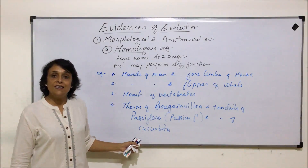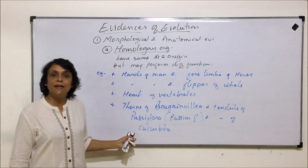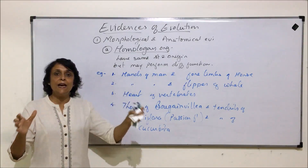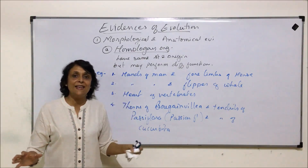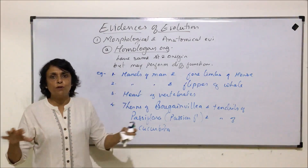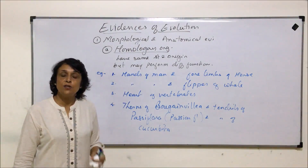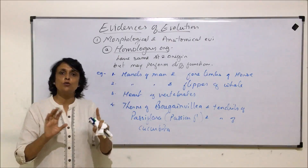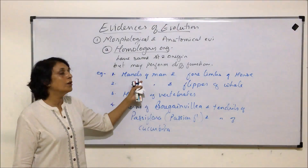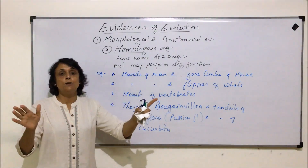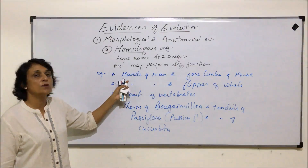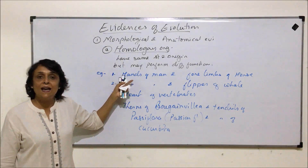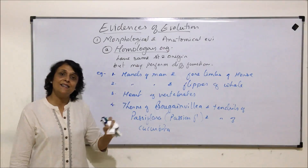In divergent evolution, a group of organisms — perhaps the same species — end up in two totally different areas with different habitats and topography. Their structures adapt to those conditions, and those adaptations make the structures perform totally different functions, even though the origin is the same. So from the same starting point they have diverged into different things — this is called divergent evolution. We will discuss divergent and convergent evolutions in more detail later.